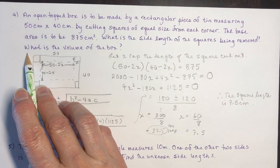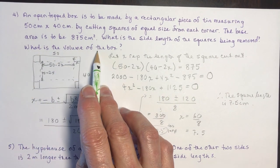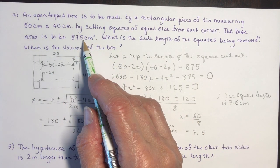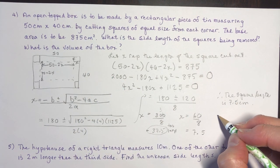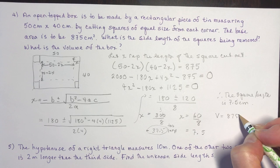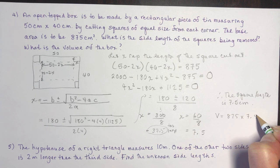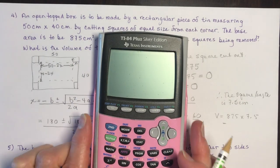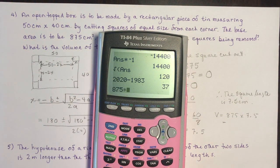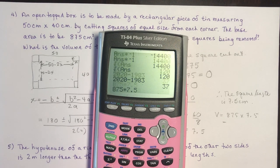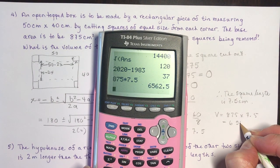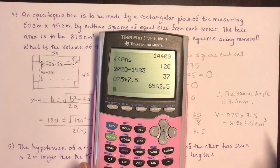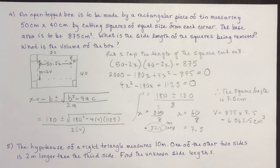Don't forget to answer everything asked in word problems. The second part asks for the volume of the box. I know the base area is 875, so volume equals 875 times 7.5. Using a calculator: 875 times 7.5 gives 6,562.5 centimeters cubed. Don't forget volume is cubic units.